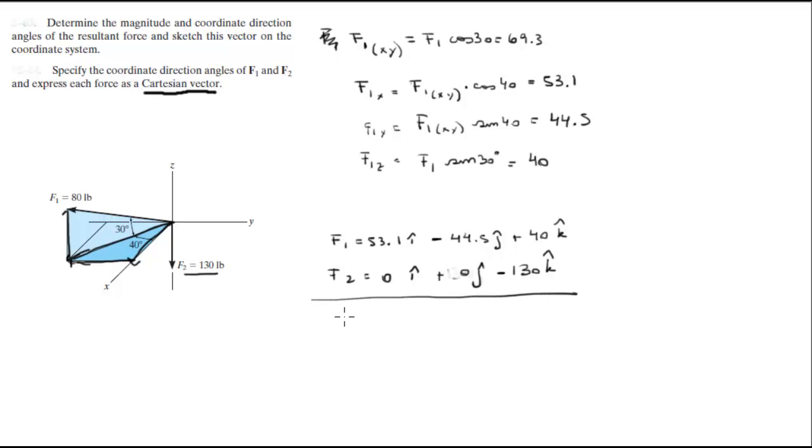So to find the resultant force, you just add them. The resultant force is 53.1 in the i, minus 44.5 in the j, plus 40 in the k.